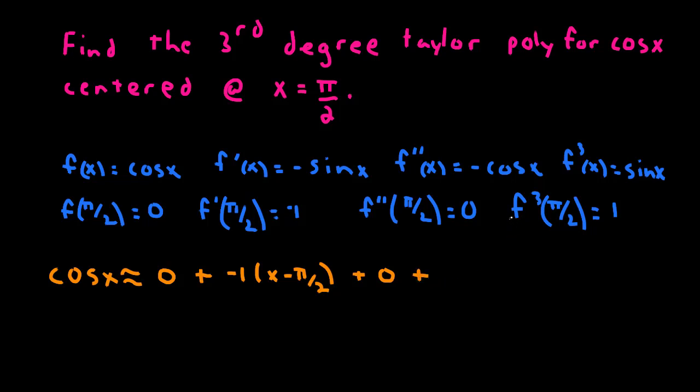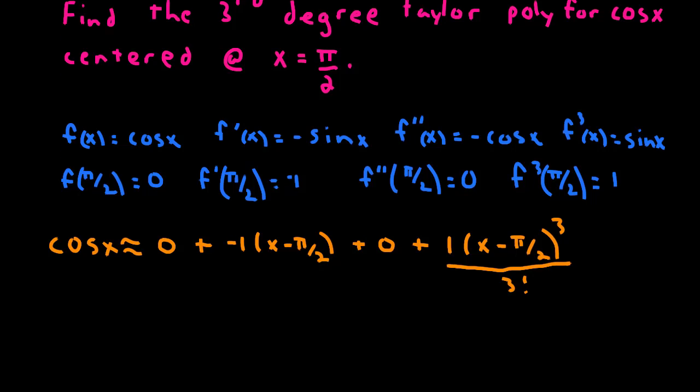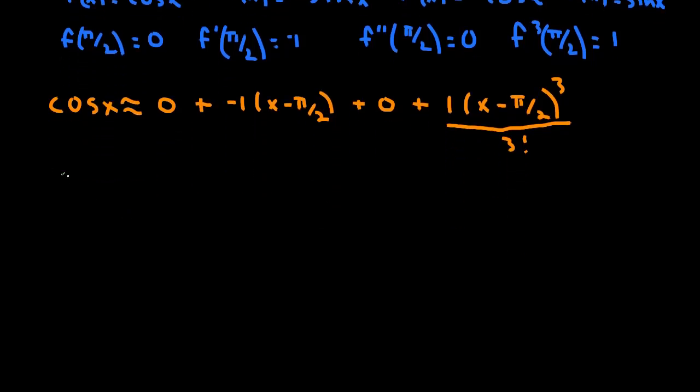And then finally, the third derivative evaluated at the center, times x minus the center cubed. And this is going to be over 3 factorial. So if we were to clean this up just a little bit, this is kind of ugly looking. But the cosine of x is approximately negative x minus pi over 2 plus x minus pi over 2 cubed over 6. And this is your third degree Taylor polynomial that will approximate the cosine of x.